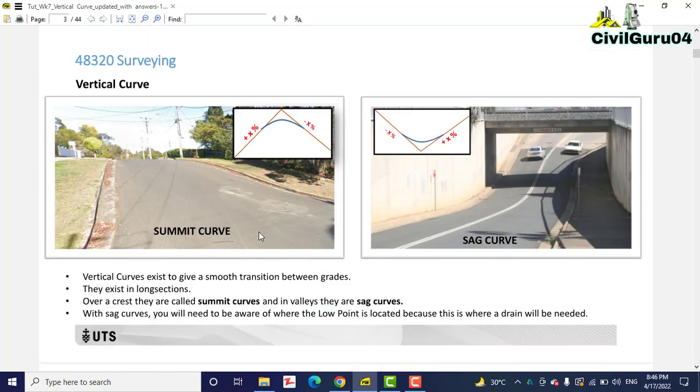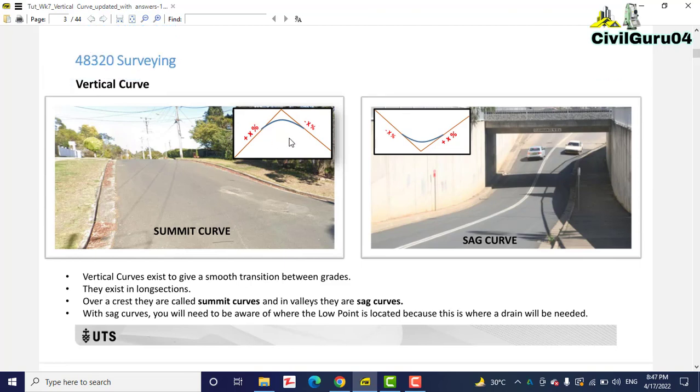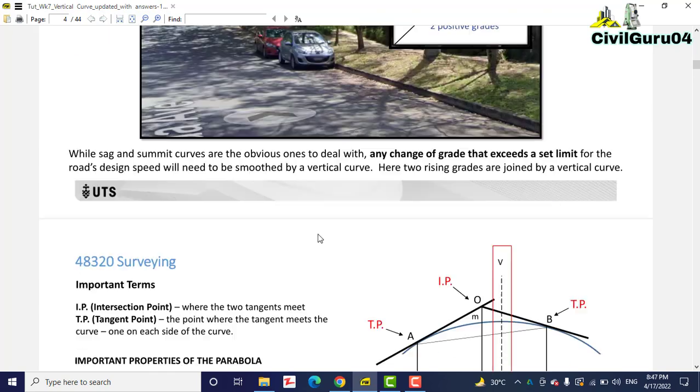First of all we have vertical curve types. These are two types - one is summit curve, you can see plus one grade will be plus and another will be minus for the summit curve, and another will be sag curve. We have also example here. Sometimes we have a vertical curve with two positive grades, you can see here.